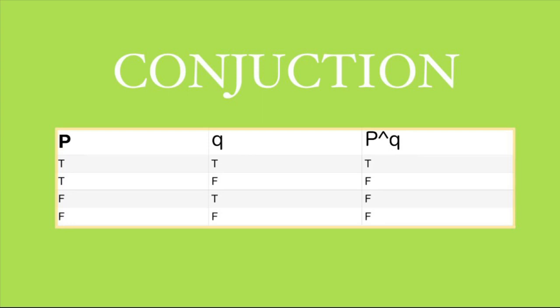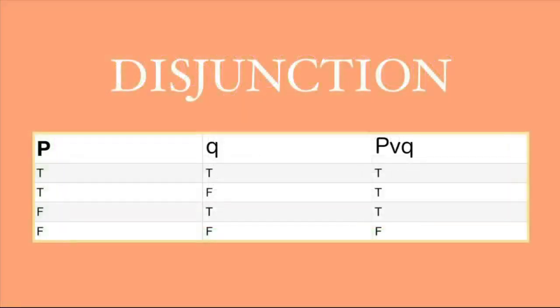The last table we have is disjunction, where I'll evaluate P or Q. On this table it's pretty much the same as conjunction—same possibilities: true-true, true-false, false-true, and false-false.